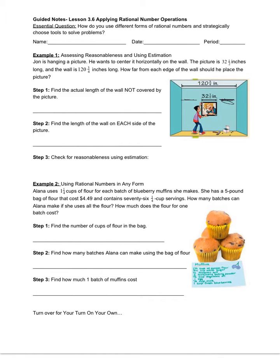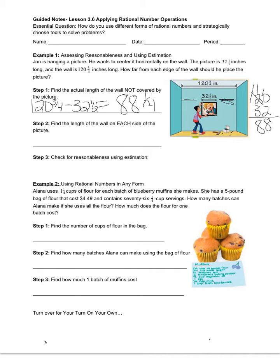So what I need to do is subtract 120¾ minus 32½. I know that ½ is equivalent to 2⁄4, and if I take 3⁄4 minus 2⁄4, I get 1⁄4 — so there I've subtracted my fractions. Now I need to take 120 minus 32, which gives me 88. So the part of the wall not covered by the picture is 88¼ inches.